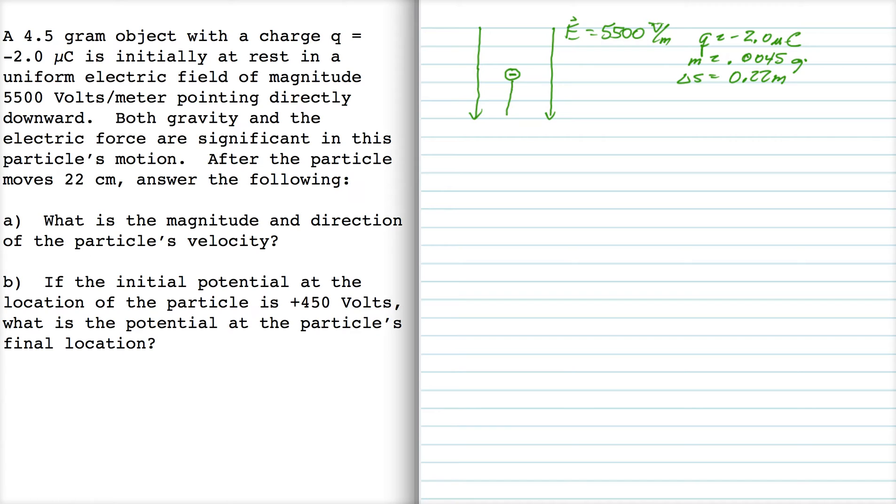You've got gravity which points down, so mg, and then the electric force points up, because the electric force qE, because negative charges naturally want to move against electric field lines.